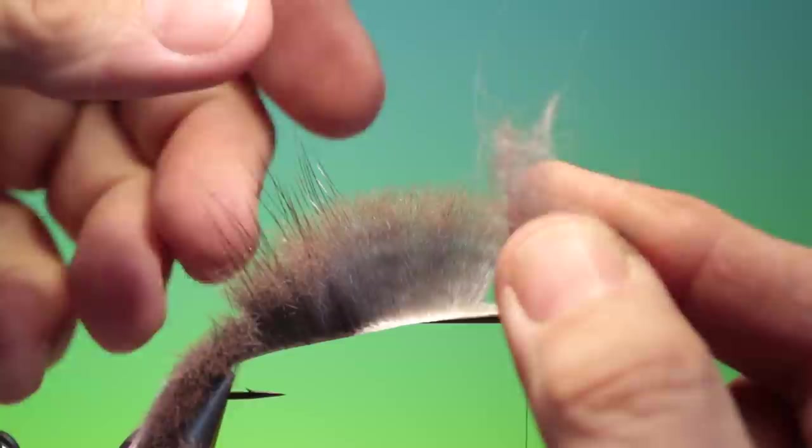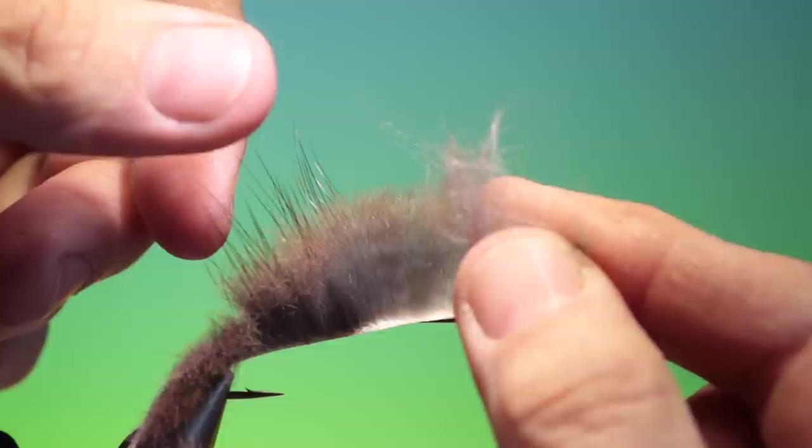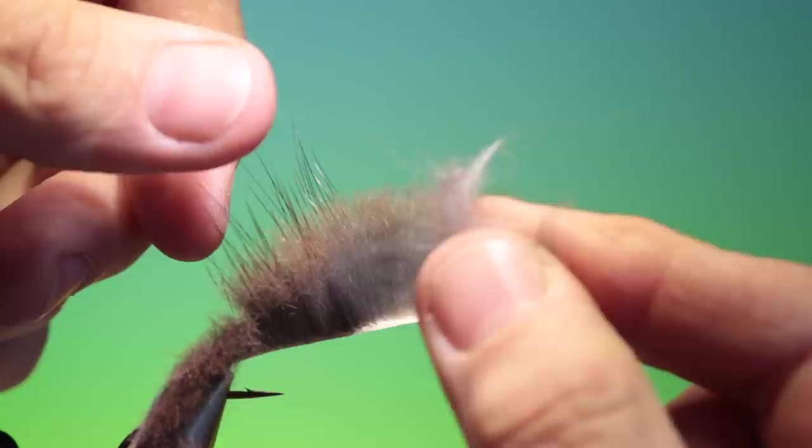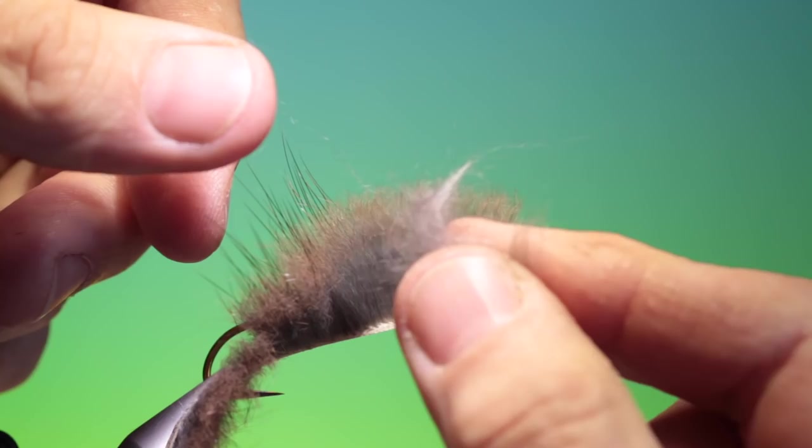You fill it with water, or you half fill it with water. You put your fur in and you give it a good shake. Once you've shaken that up, the fur will mix beautifully. And then you can take it out, put it between some kitchen paper to press out most of the moisture, and then put it on some newspaper to dry.